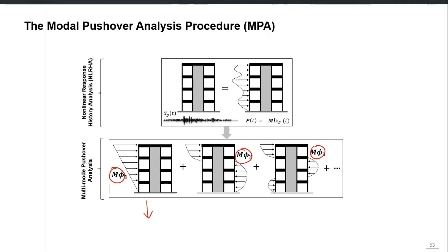In nonlinear time history analysis, we apply directly the earthquake time history, which can be converted into effective earthquake forces that have a random distribution along the height as well as in the time variation. Instead of doing that, we use the idea of modal expansion of effective earthquake forces and calculate the modal inertia load pattern for each mode.